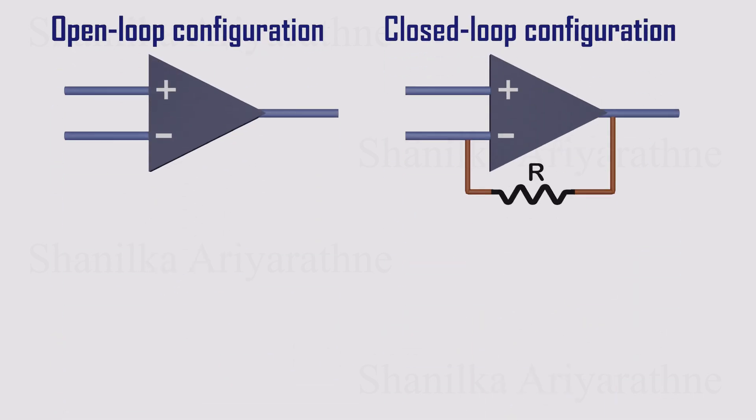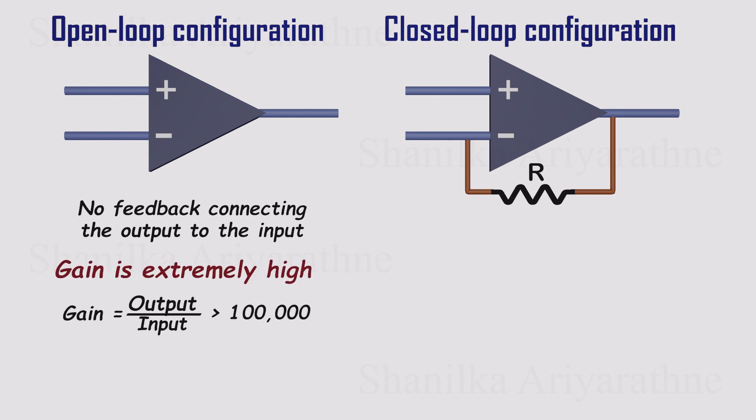Op amps are usually used in two ways, open loop or closed loop. In open loop, there's no feedback, so the gain is massive, hundreds of thousands or more. That's why it's mostly used in comparators, where the only job is to tell which input is higher. We've got a full video on those, links in the description.